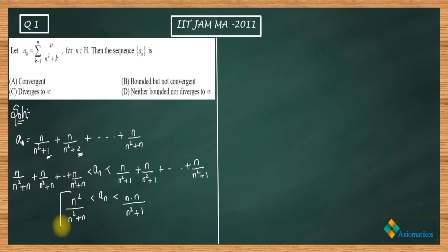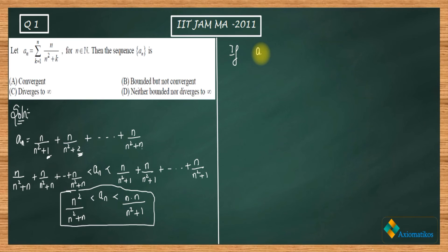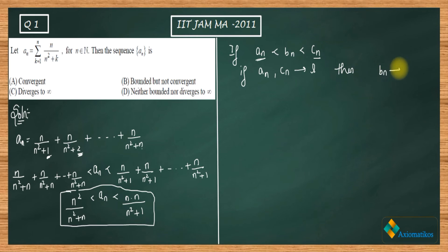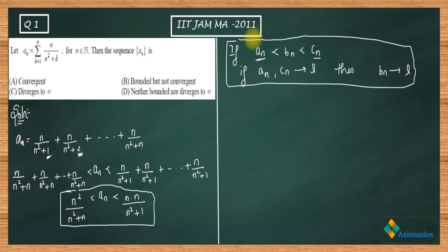Now I'll state the sandwich principle: if we have three sequences a_n, b_n, and c_n satisfying a_n ≤ b_n ≤ c_n for all n in the naturals, and if a_n and c_n both converge to the same limit L, then b_n also converges to L. I hope you already know this principle — it's there from your intermediate level.